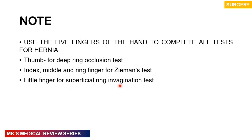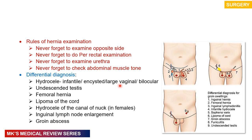Rules of hernias: never forget to examine the opposite side, never forget to do a rectal examination, never forget to examine the urethra, and never forget to check full abdominal muscle tone. Differential diagnoses include hydrocele, undescended testes, femoral hernias, lipomas of the cord, hydrocele of the canal of Nuck in females, inguinal lymph node enlargement, and groin abscess. Investigations include ultrasound of the abdomen and chest X-ray to rule out chronic bronchitis.